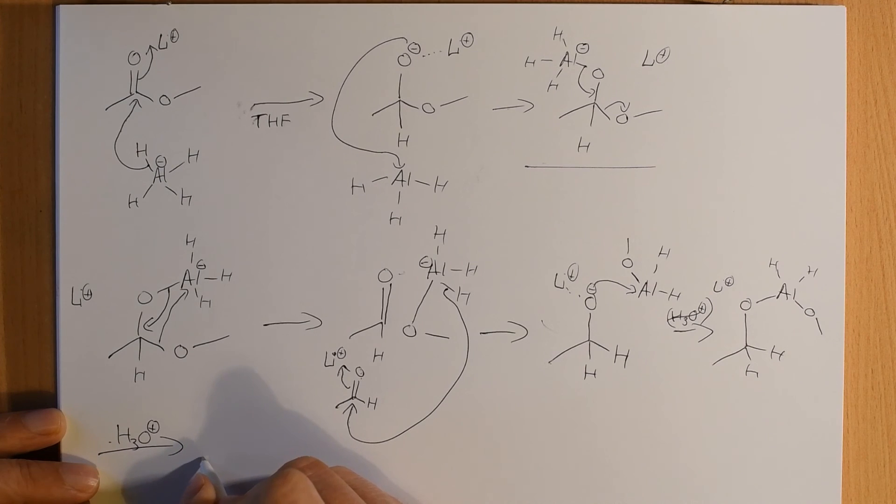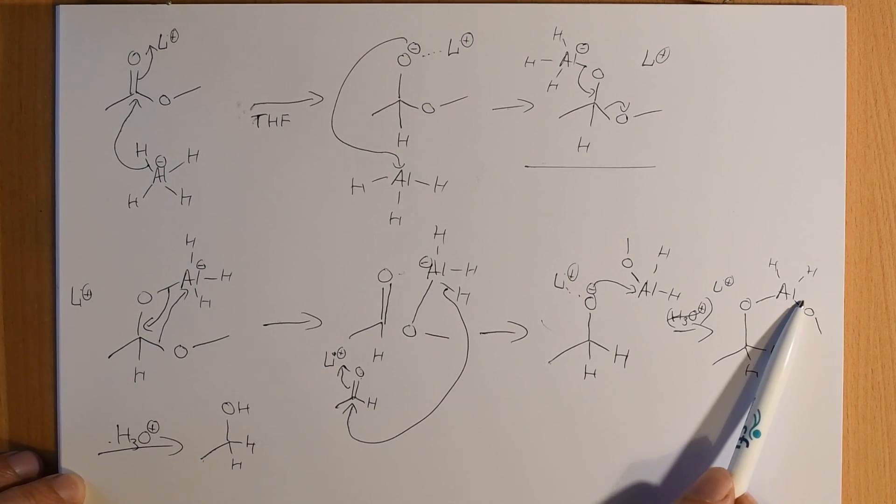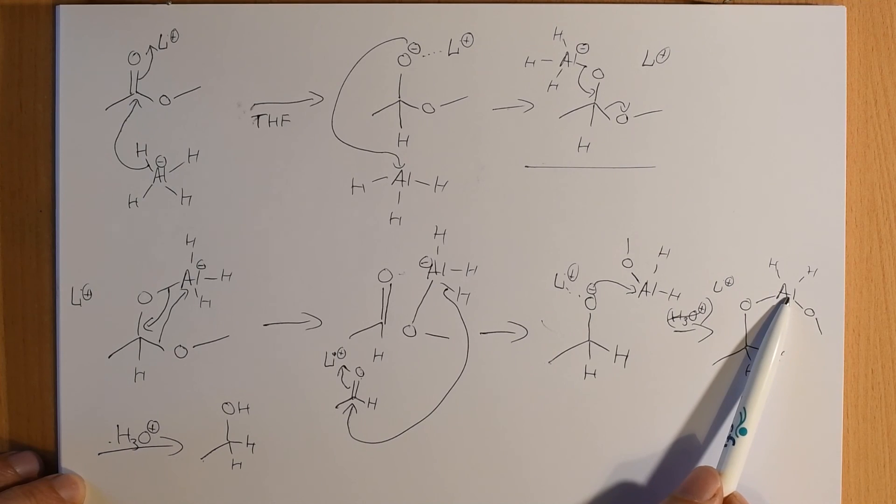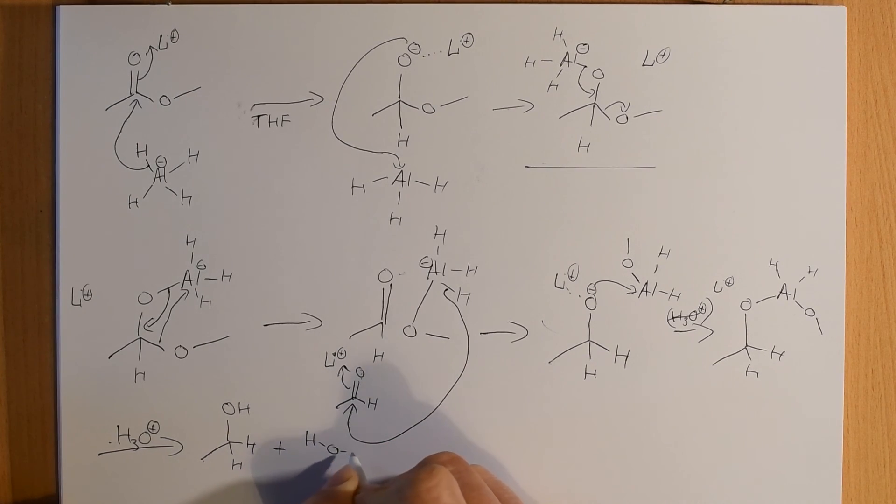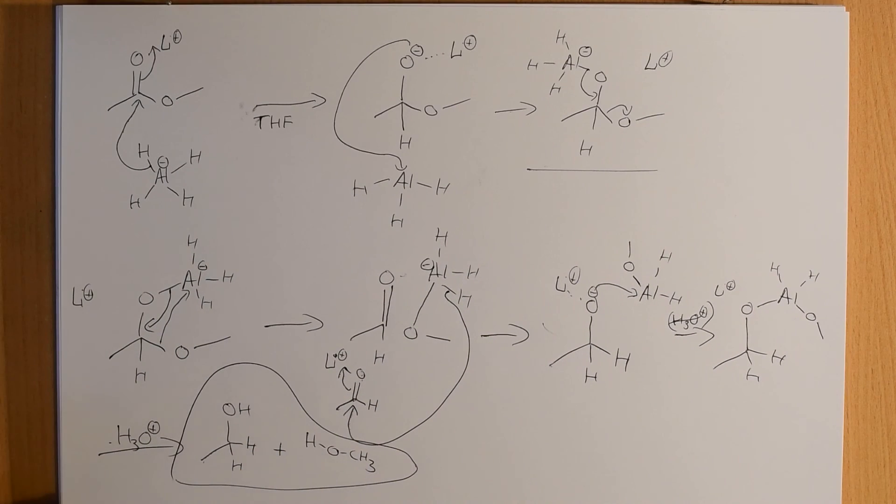And only when you add in your H3O plus will you finally get your alcohol. It's worth also noting that you're going to release this alcohol too because it's also bound to the aluminum so the H3O plus or the aqueous acid isn't just going to release the ethanol as we've drawn it here it's also going to release the methanol and they are our final products.